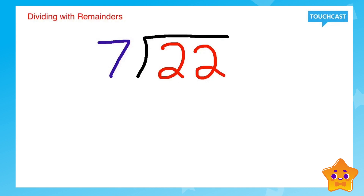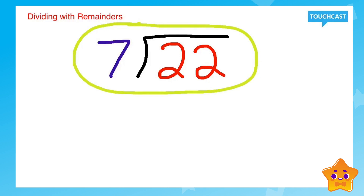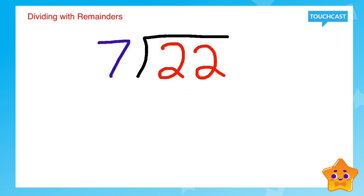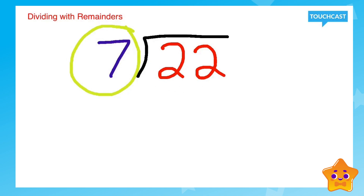Now that we're in division, we're going to talk about dividing with remainders. To use this process, we have to look at the equation we have here. The first equation is twenty-two divided by seven. Twenty-two is our dividend — that's the number we're looking to break up. Seven is our divisor, which tells us how many ways we want to break that dividend up.